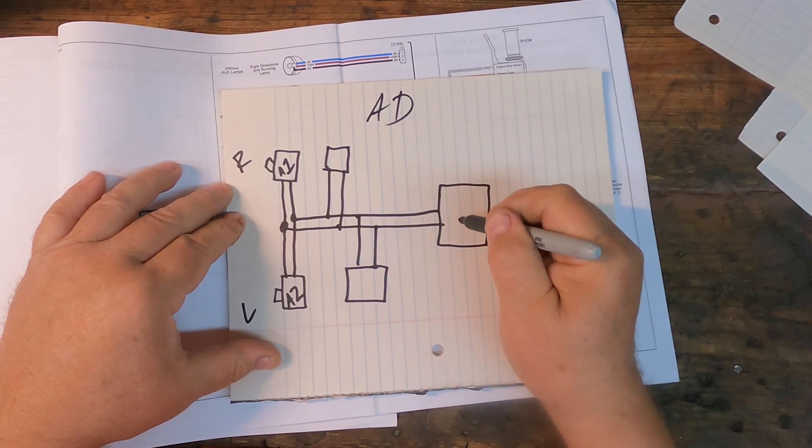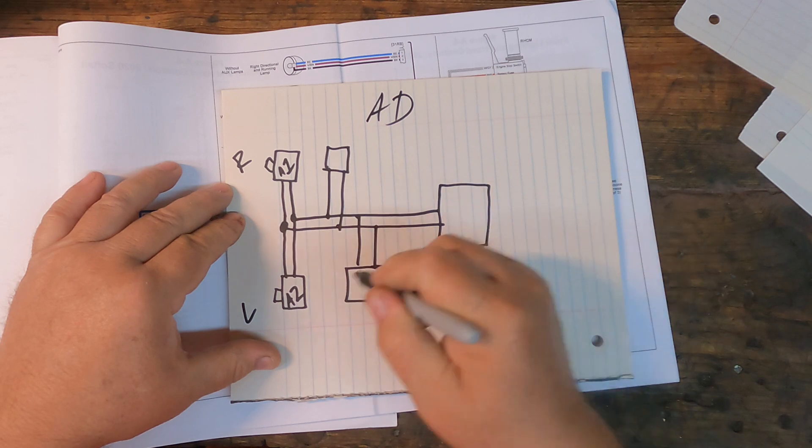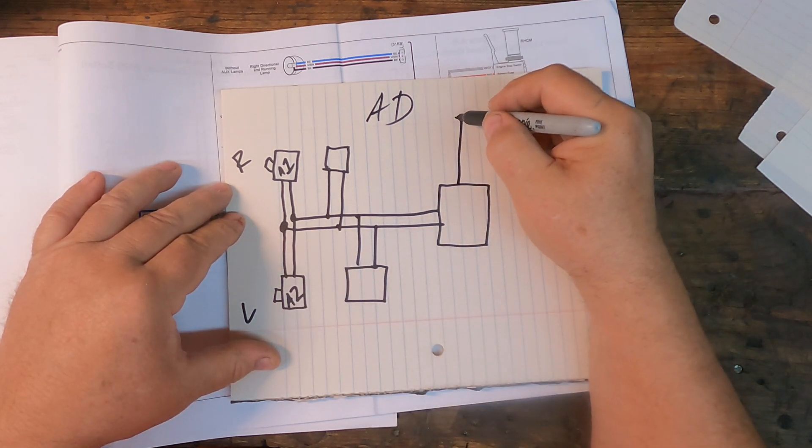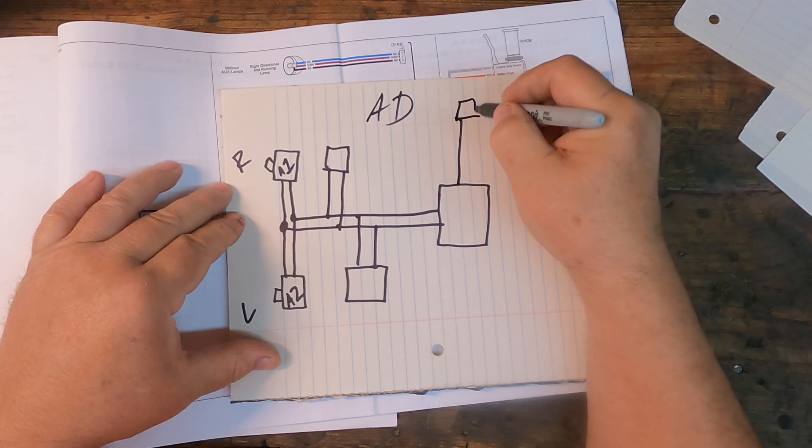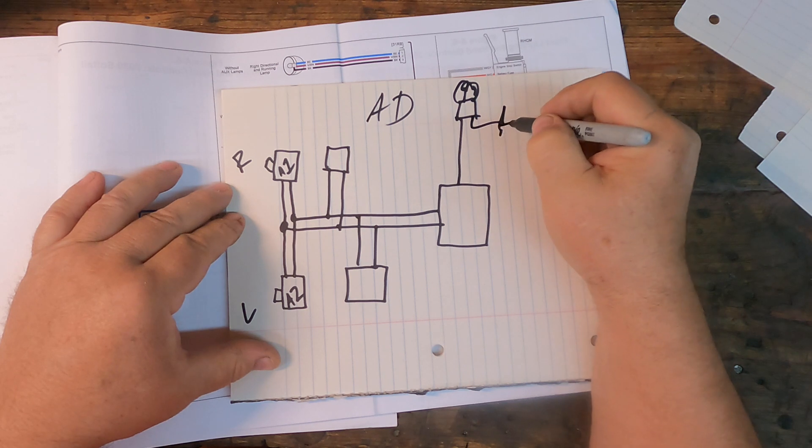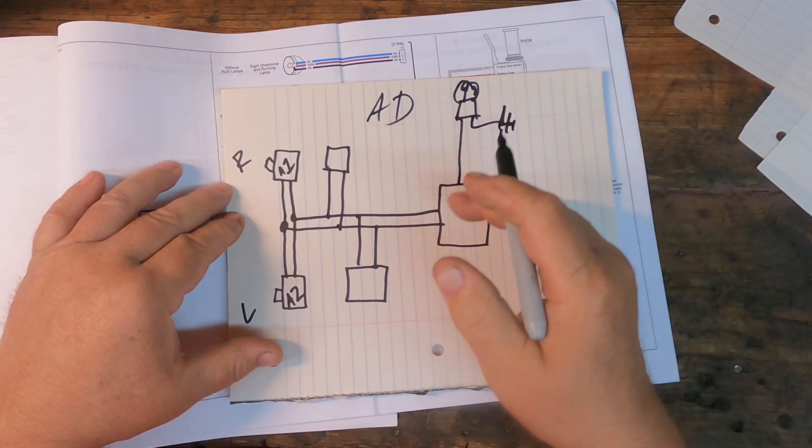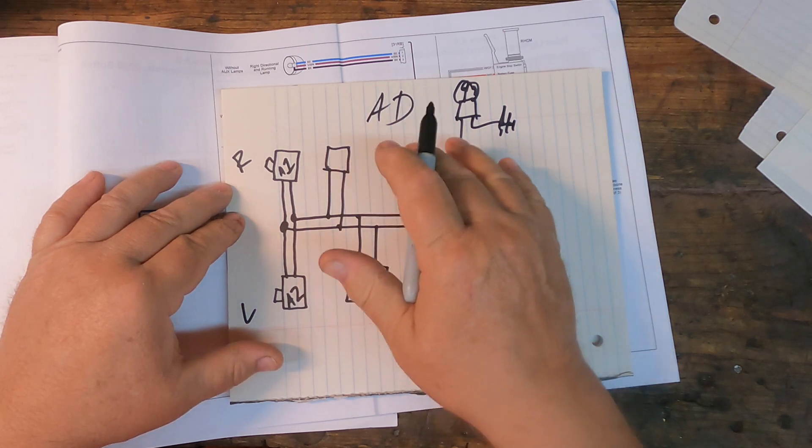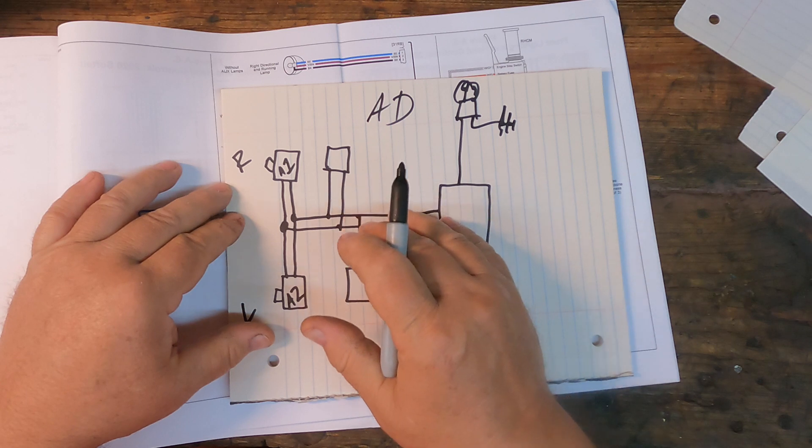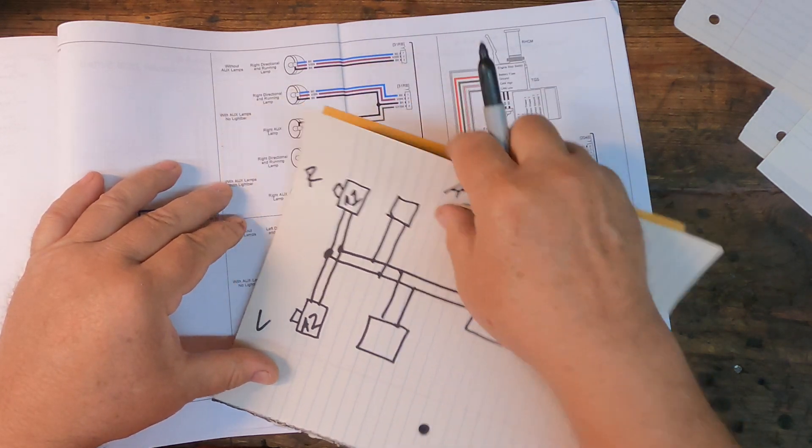Anyway, once the computer gets the command to turn on a turn signal, it will output a voltage to the turn signal, my turn signal bulb. And the light will come on. Now this might not be exactly how it's hooked up. Well that pretty much is exactly how it's hooked up. So let's look at the diagram and find the evidence for this.